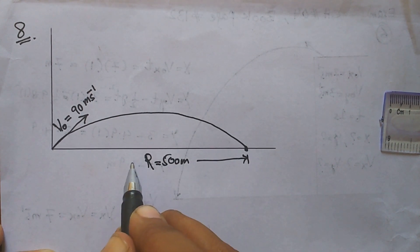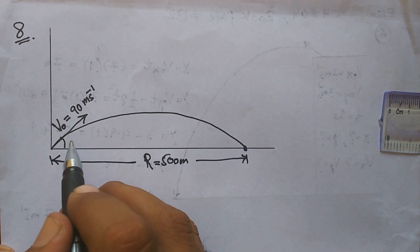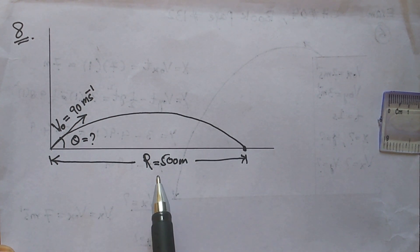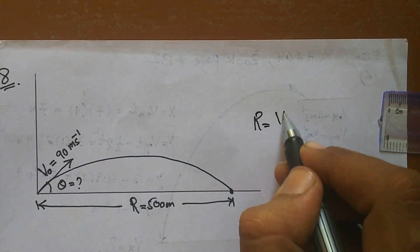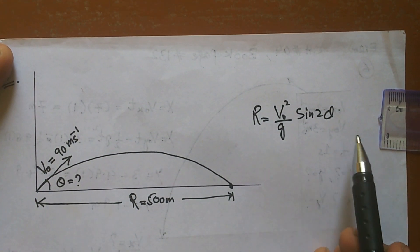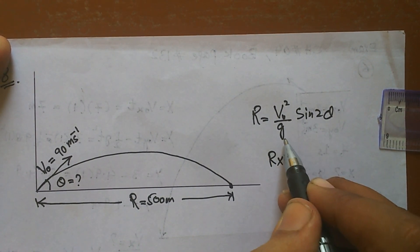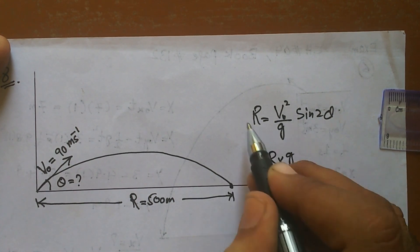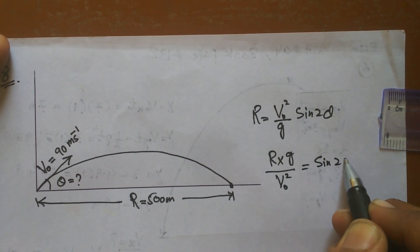Range means the horizontal distance. We know that range R is equal to V₀² divided by g, multiplied by sin(2θ). I want to find the launch angle θ, so I rearrange: sin(2θ) equals R times g divided by V₀². Substituting the values gives sin(2θ) a calculable value.